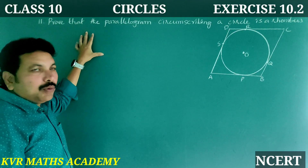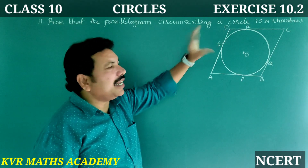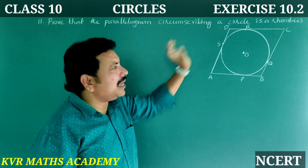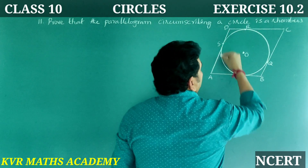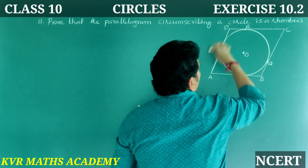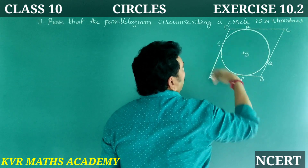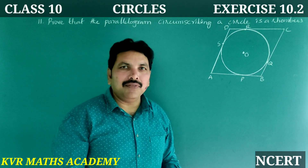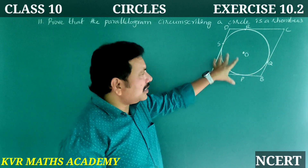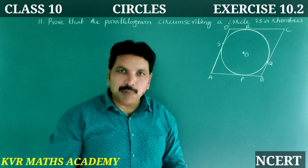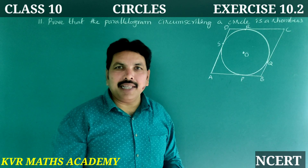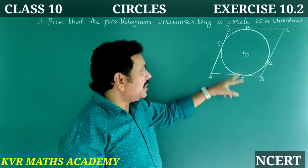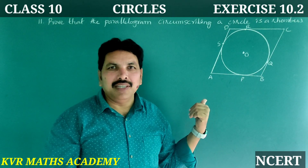Next, 11th question: Prove that the parallelogram circumscribing a circle is a rhombus. A parallelogram has opposite sides equal, while a rhombus has all sides equal. If we prove two adjacent sides of the parallelogram are equal, it becomes a rhombus.